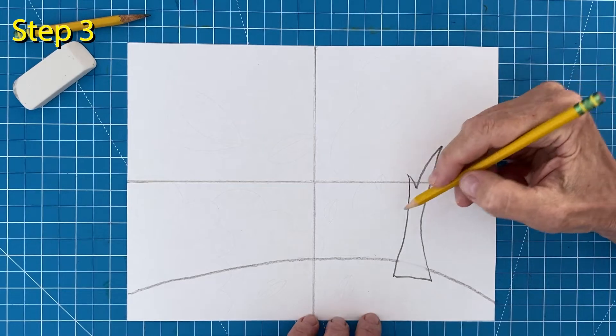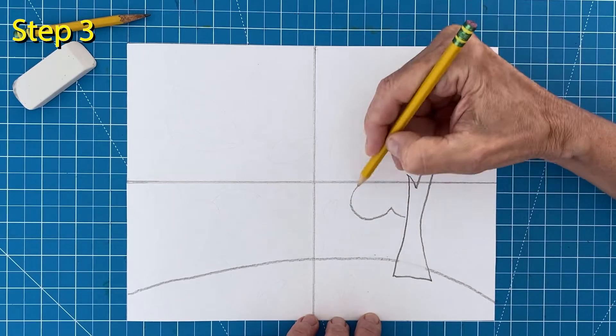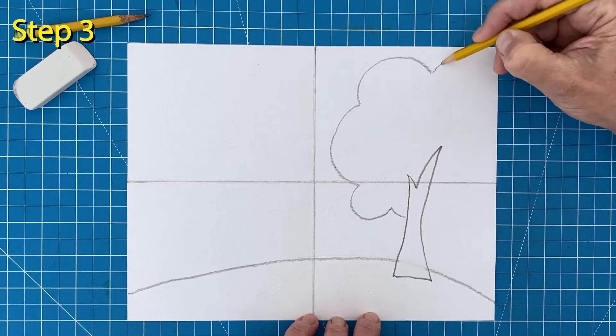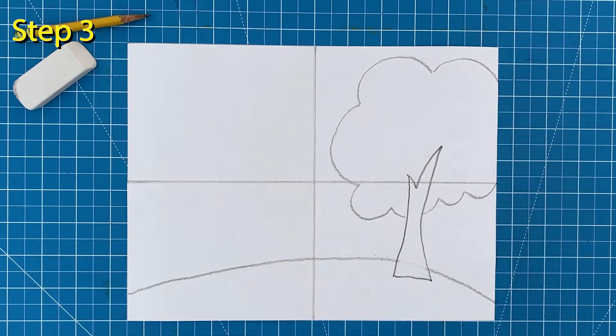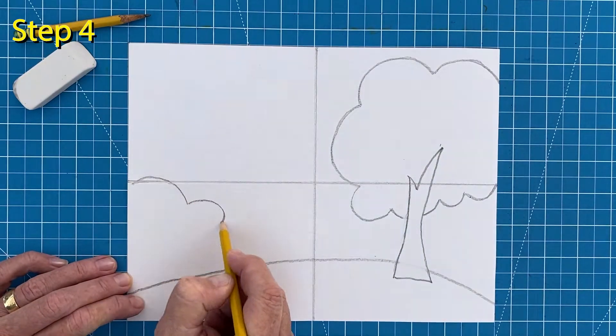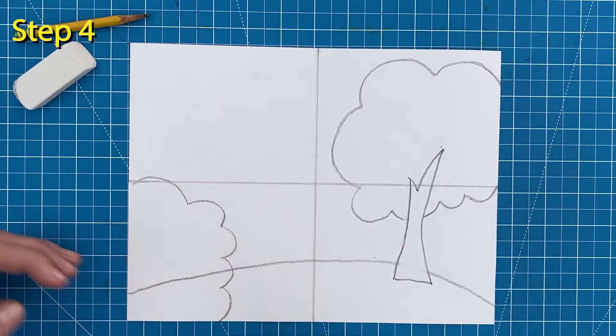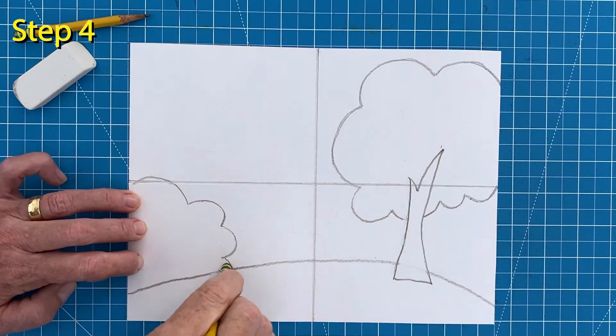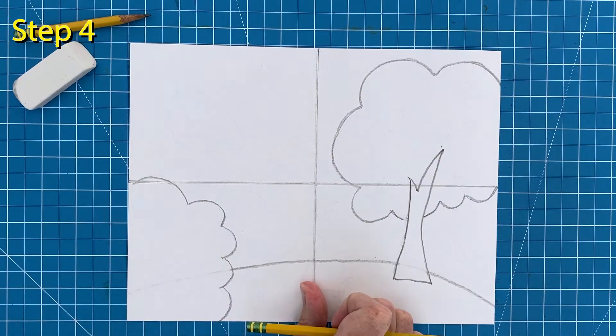Step number three. Draw a kind of cloud shape behind the top of the tree for the leaves. Step number four. Now draw a large bush in the foreground on the bottom left side and erase that inside line too because the bush is in front of the horizon line.